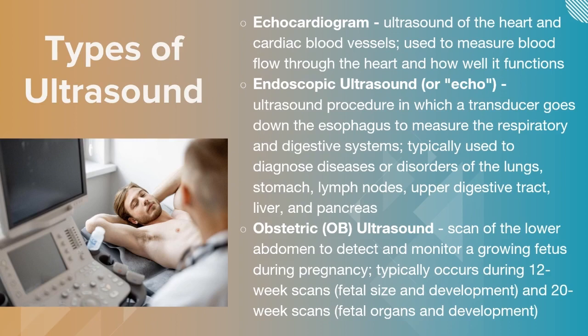Endoscopy ultrasound — ECHO is the shorter version many people use — is an ultrasound procedure that involves going down the esophagus to assess the respiratory and digestive systems, usually used for diagnosing diseases and disorders of the lungs, stomach, lymph nodes, upper digestive tract, liver, and pancreas.